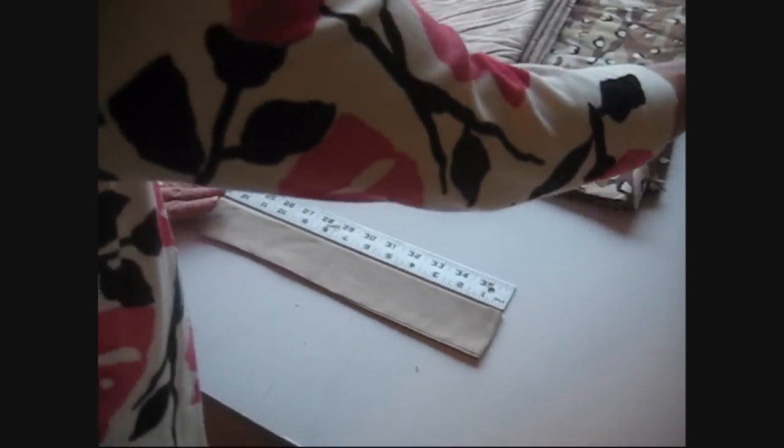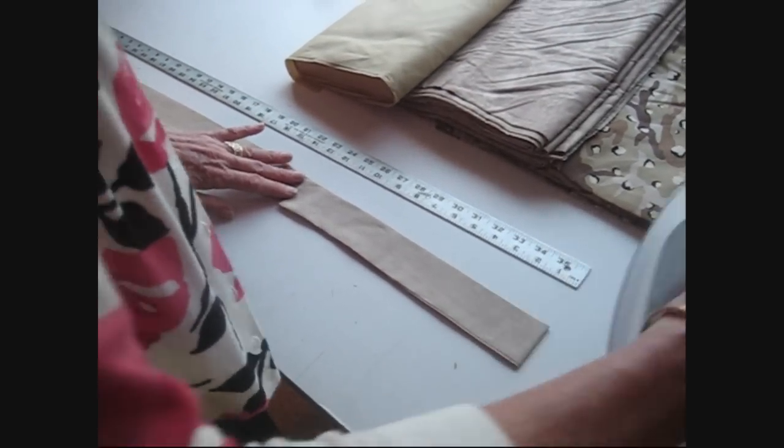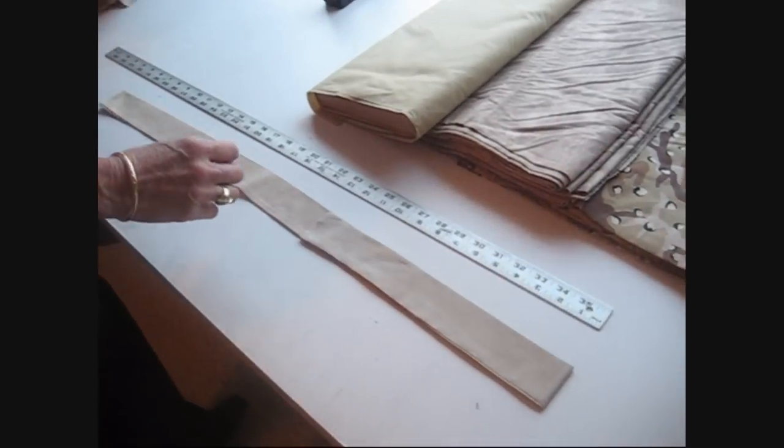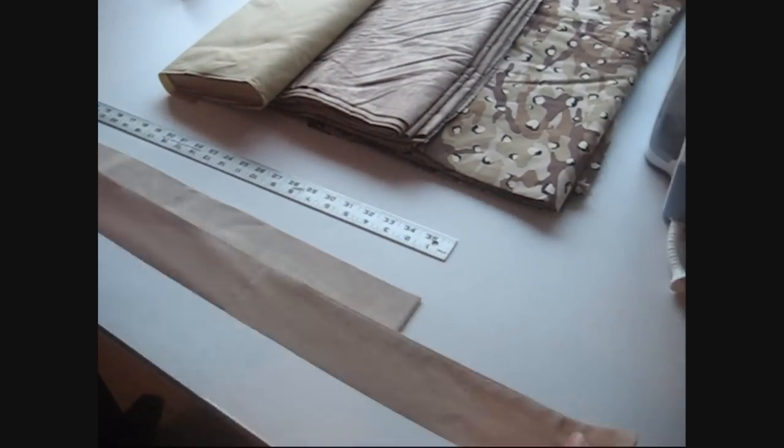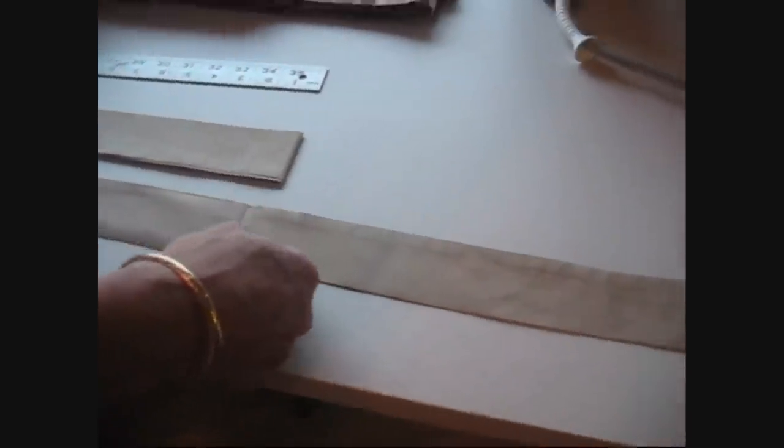And then press it with your iron so that it makes a crease. And the crease becomes the mark for where you stitch your first cross stitch.